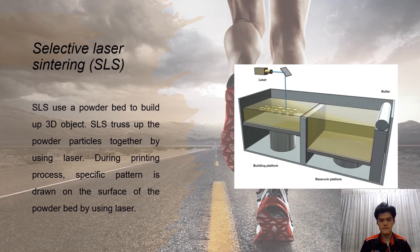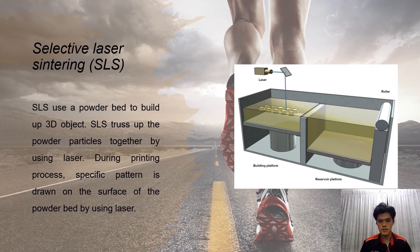For Selective Laser Sintering, we use a powder bed to build up the 3D object. The Selective Laser Sintering will fuse the powder particles together by using the laser. During the printing process, specific patterns are drawn on the surface of the powder bed by using the laser.